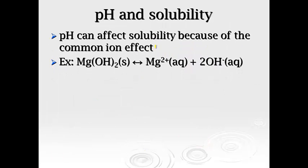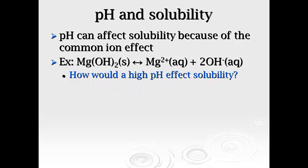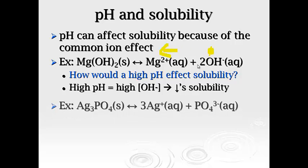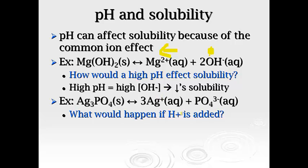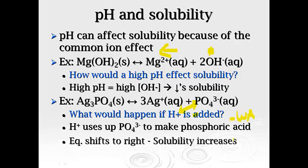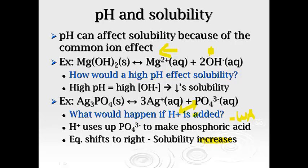Now pH can affect solubility simply because of the common ion effect. If I have magnesium hydroxide, a high pH would affect solubility. A high pH will have a very high hydroxide concentration because high pH means that it's basic, so it will decrease the solubility. If there's more sodium hydroxide, it's going to drive the reaction back this way. For example, silver phosphate, what would happen if we added hydrogen ion to the solution? Well, hydrogen ion is going to attach itself to the phosphate to make phosphoric acid because it's a weak acid. And so if you're pulling away more phosphate, it's going to force it to the right and the solubility will increase. So you can see all of these ideas with the Le Chatelier's allow us to actually shift the directions the way that we want them.